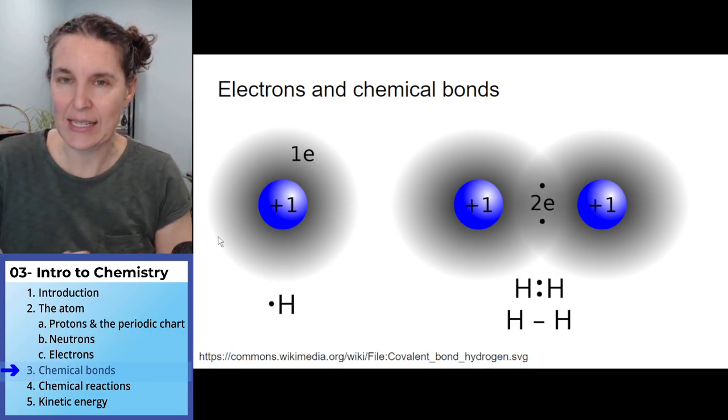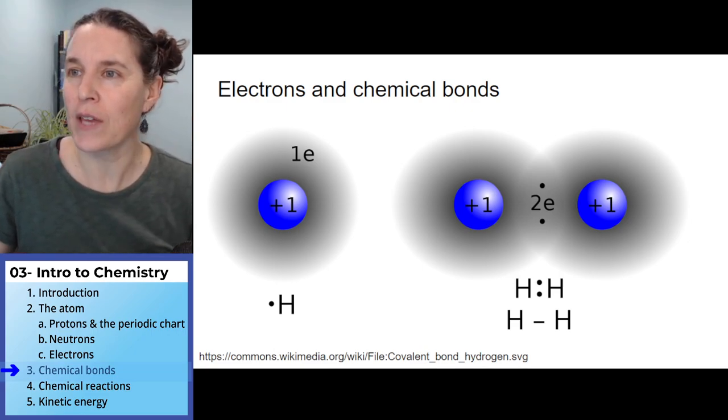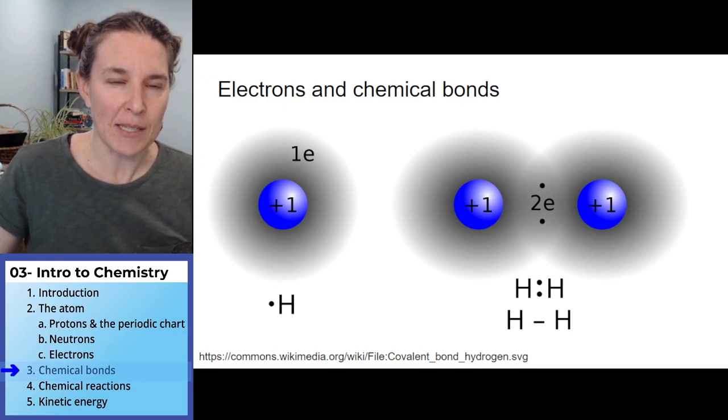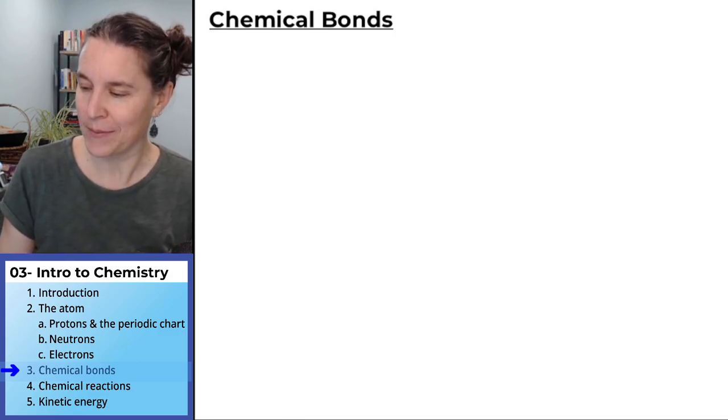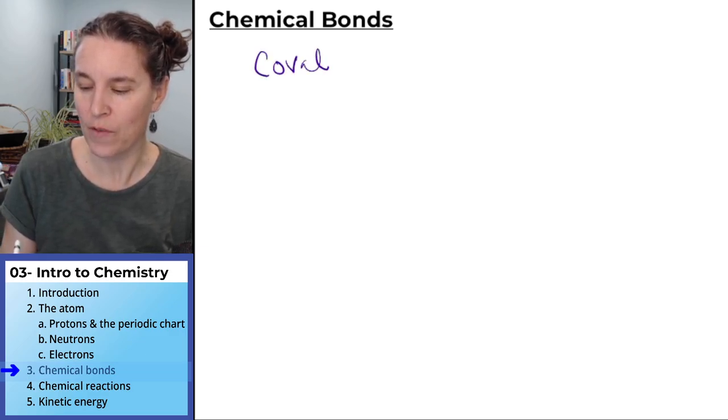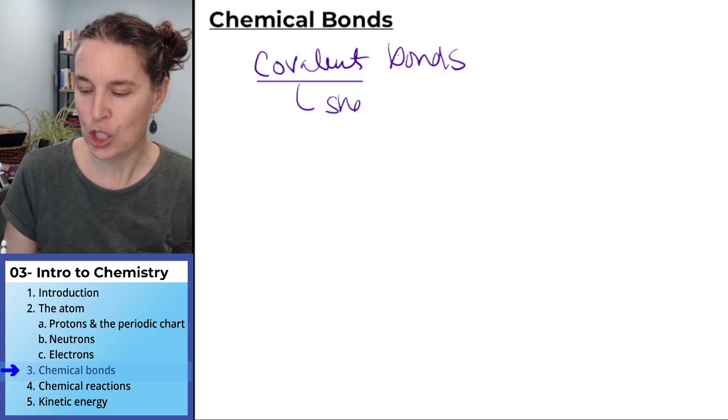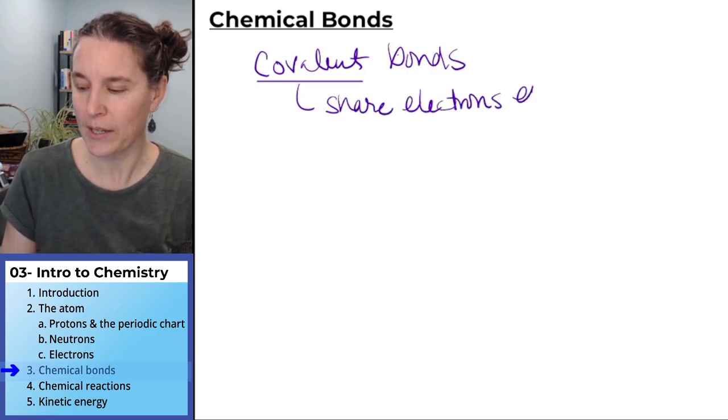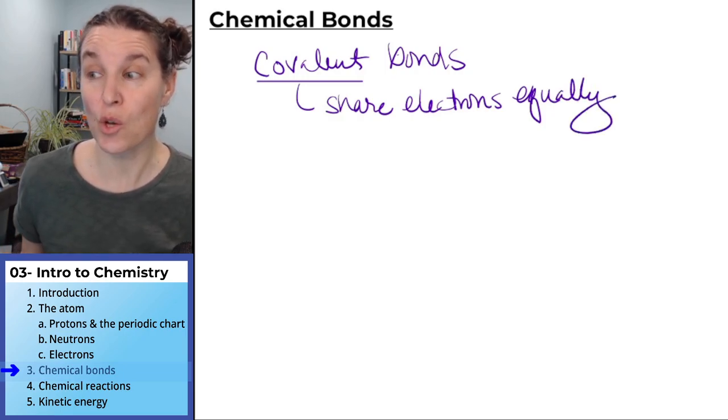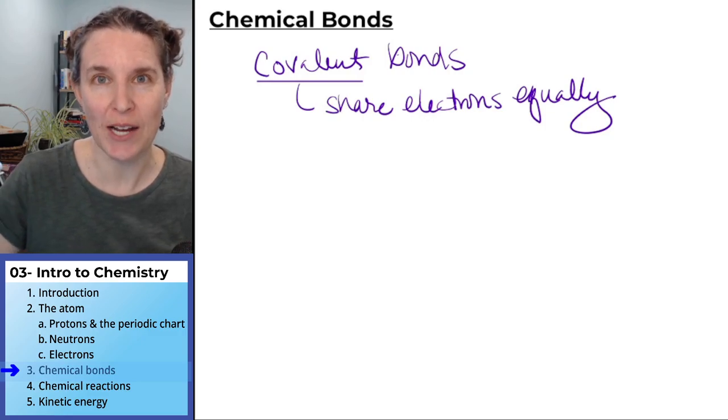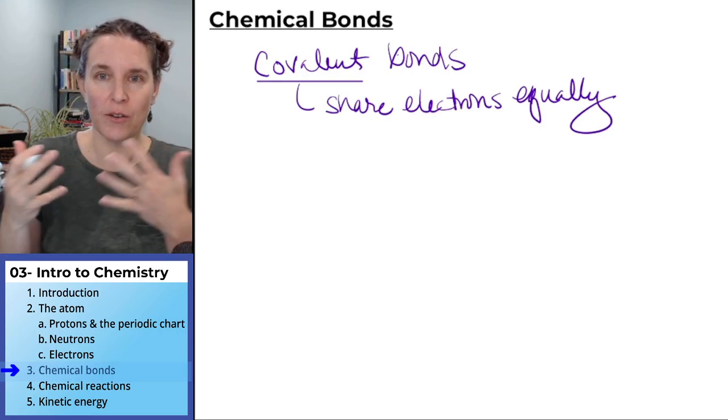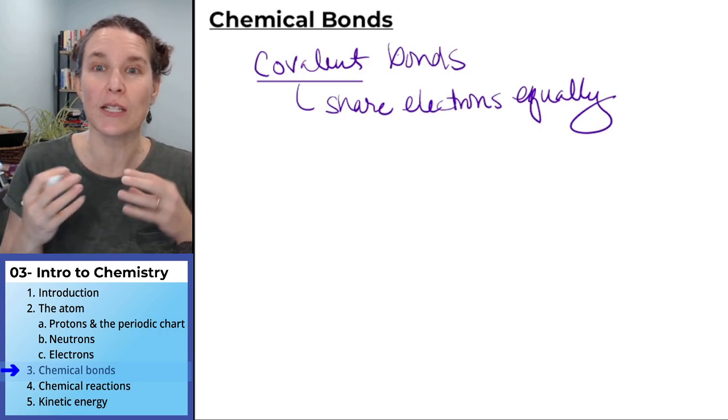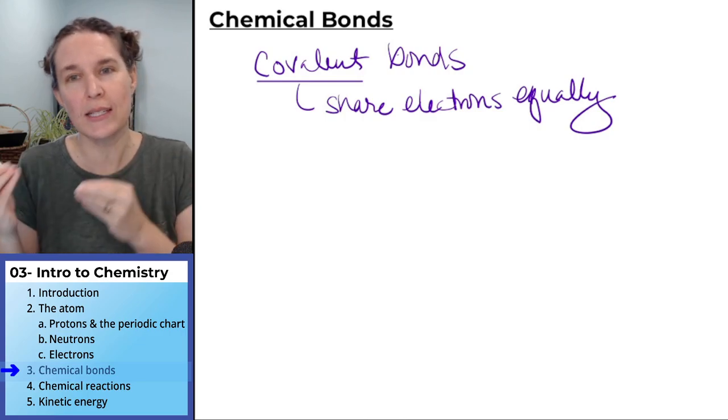There's two kinds of chemical bonds that we will deal with. We're going to have covalent bonds. And covalent bonds share electrons equally. So when that picture that I had of the two hydrogen atoms forming a chemical bond, they actually form a perfectly covalent bond, and they share the electrons equally. So the electron is most likely to be next to hydrogen one as it is next to hydrogen two.